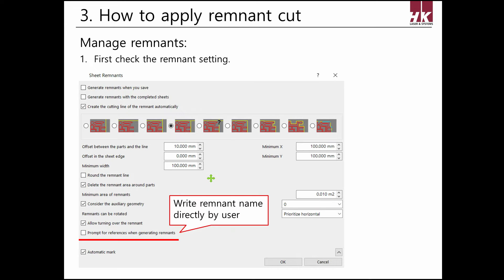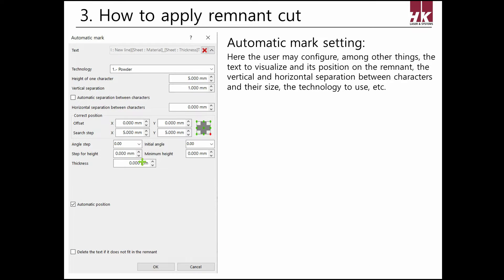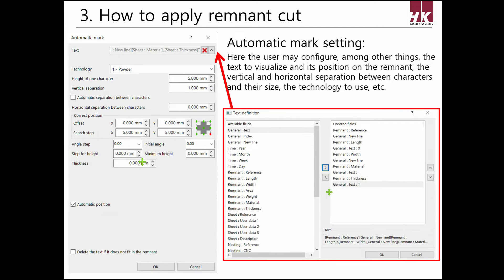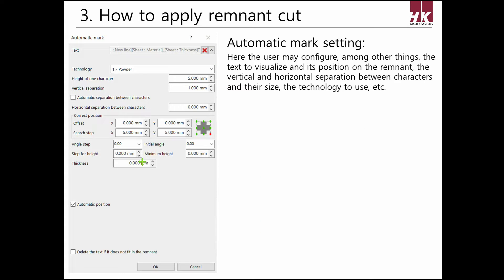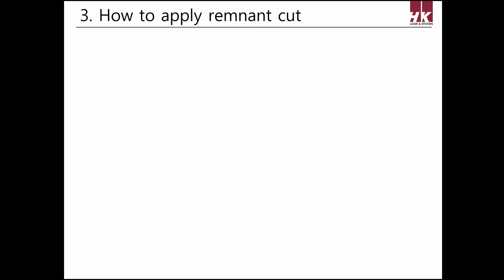Check prompt for references when generating remnants — this setting lets the user write the remnant name directly. Check automatic marking and click the right icon to make settings for automatic marking. You can choose elements to mark in text; normally select references, size, material, and thickness. Once settings are made, it will mark on the remnant. Height of one character means the size of the font. Remnant automatic separations between characters separates each character to make it easier to recognize. The red dot below is the marking position — click on the desired position.